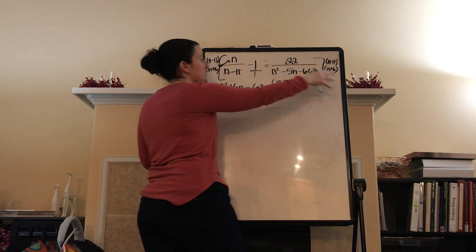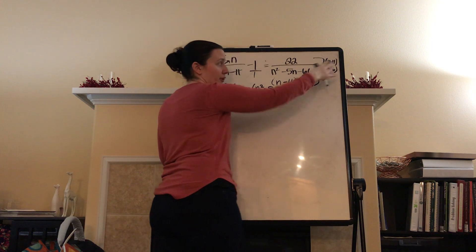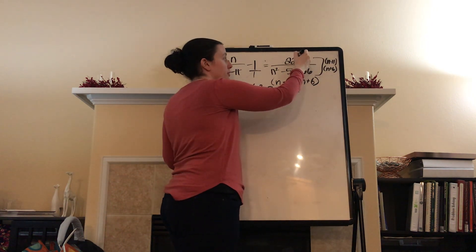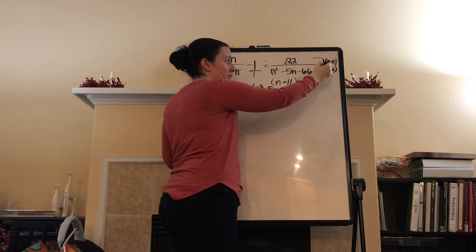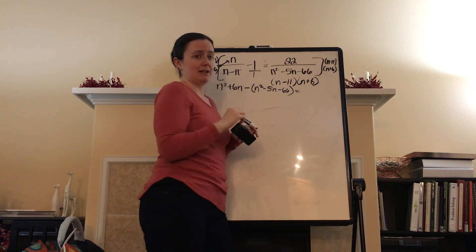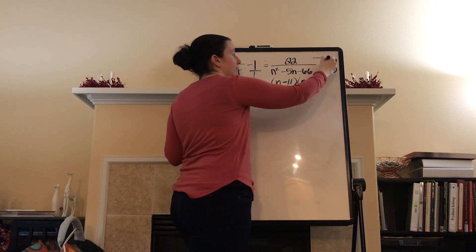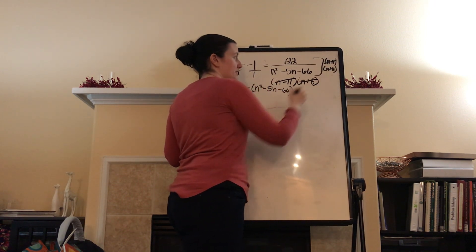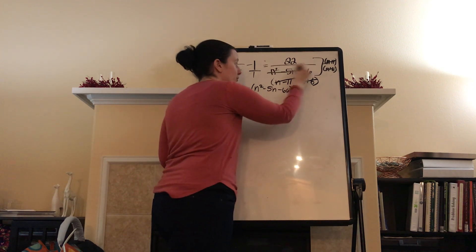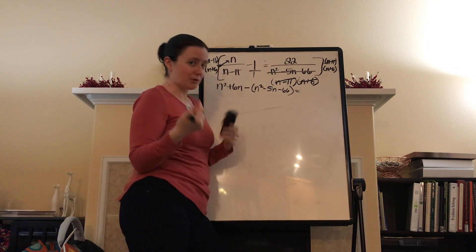Equals. Now I'm going to multiply 22 times (n minus 11)(n plus 6), all divided by (n squared minus 5n minus 66), which is (n minus 11)(n plus 6). The (n minus 11) and the (n plus 6) cancel out — so the whole denominator cancels out. What's left? 22.